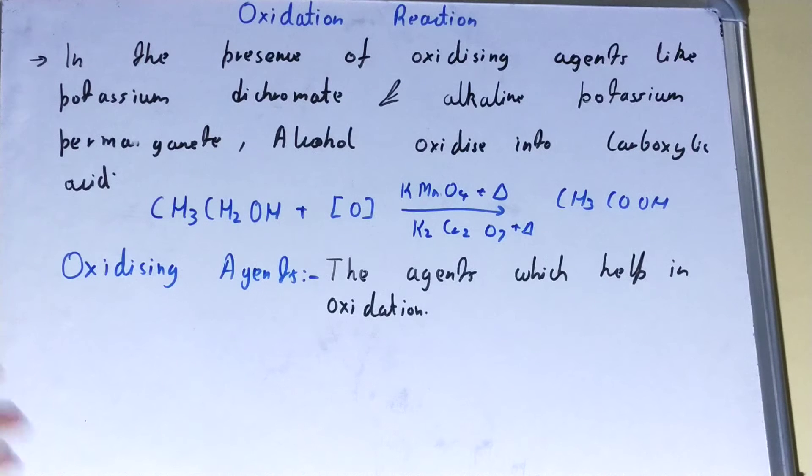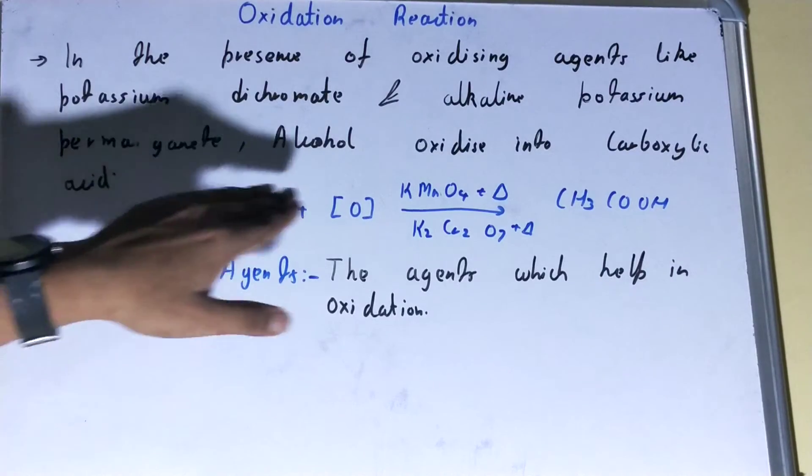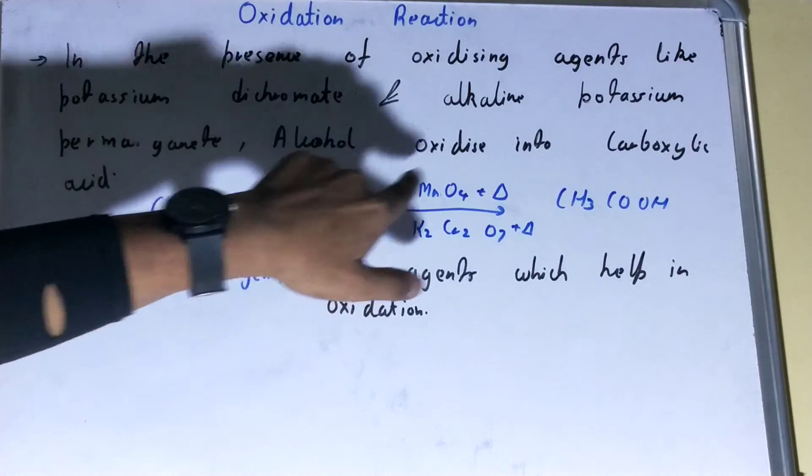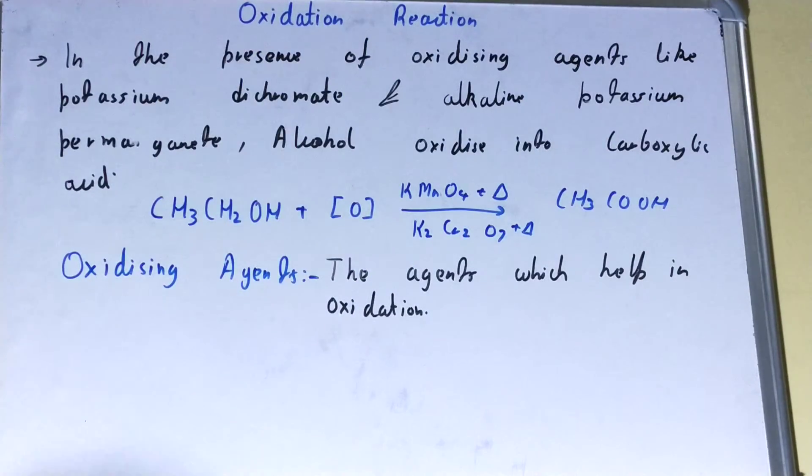see this with the help of the reaction. So we have alcohol over here, and this is basically oxidizing. Alcohol is oxidized into carboxylic acid in the presence of various compounds as a catalyst.